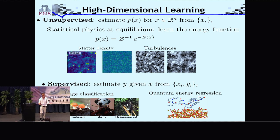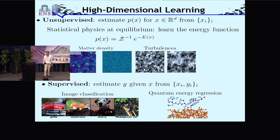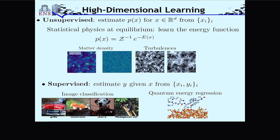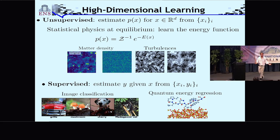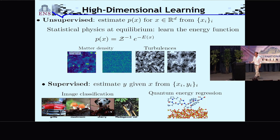Then you have a second type of problem called supervised learning, where you want to answer a question asked on the data — to estimate the parameter y given the data x. For example, x is an image associated with a class such as mushrooms, cherries, or Madagascar cats. In physics, x could be the geometry and atomic specificity of a molecule, and you may want to compute its atomic energy without solving the Schrödinger equation.